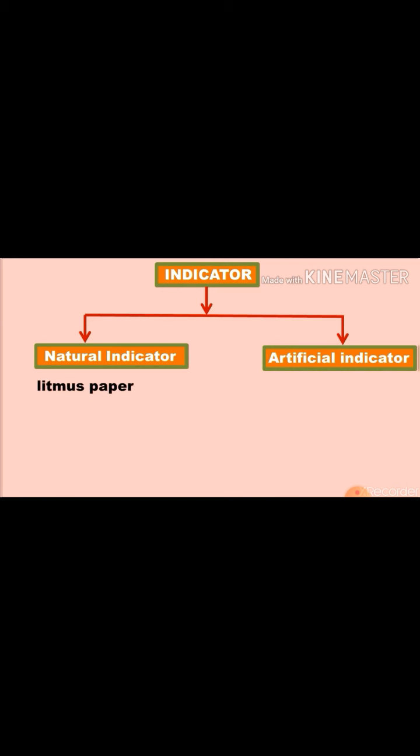An example of a natural indicator is litmus paper. Litmus paper is obtained from lichens. Lichens are the combination of fungus and algae. This is a good example of a symbiotic relationship in which fungus and algae live together and give benefits to each other.